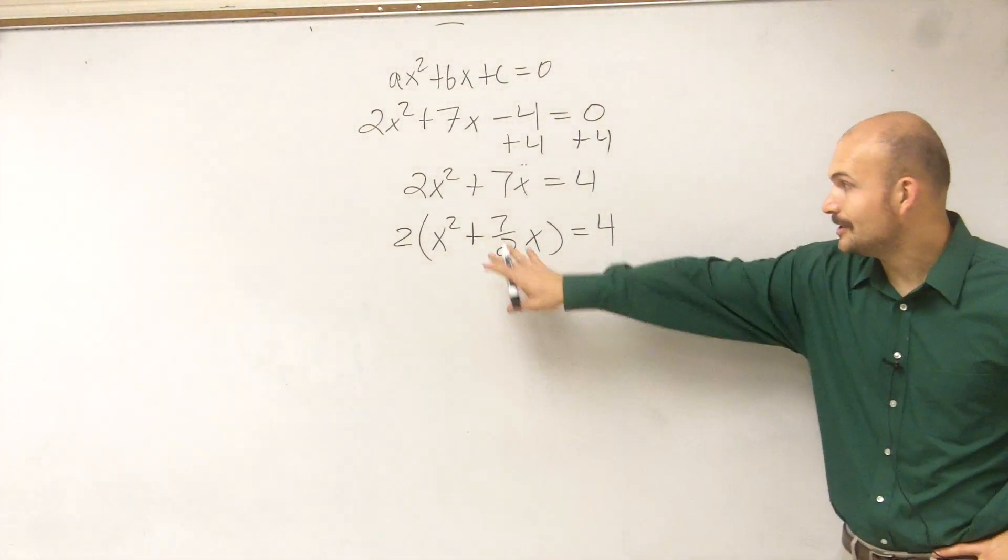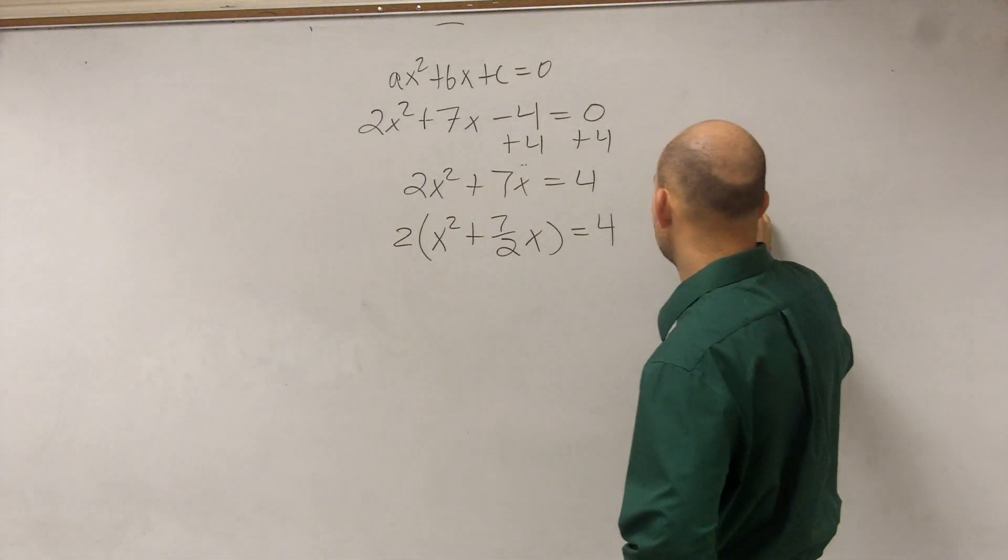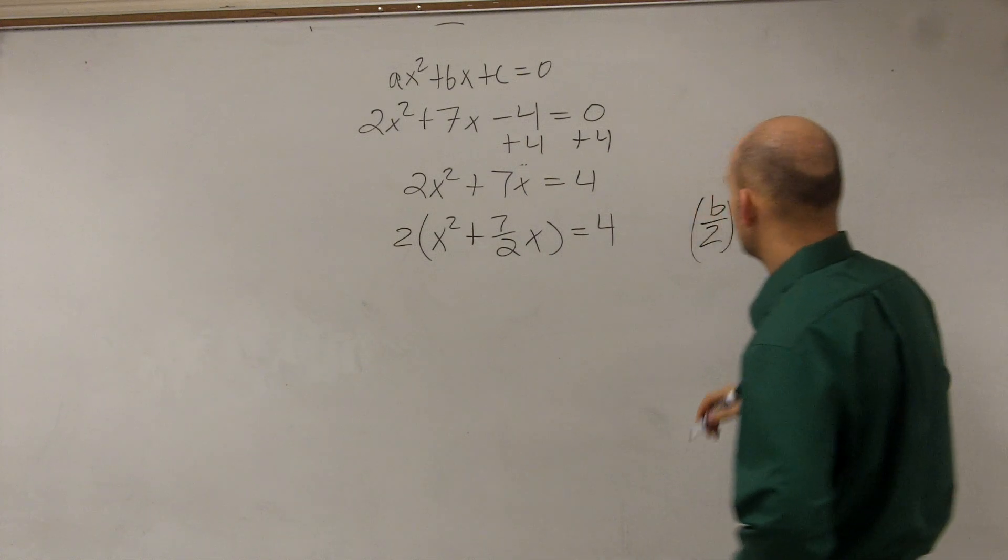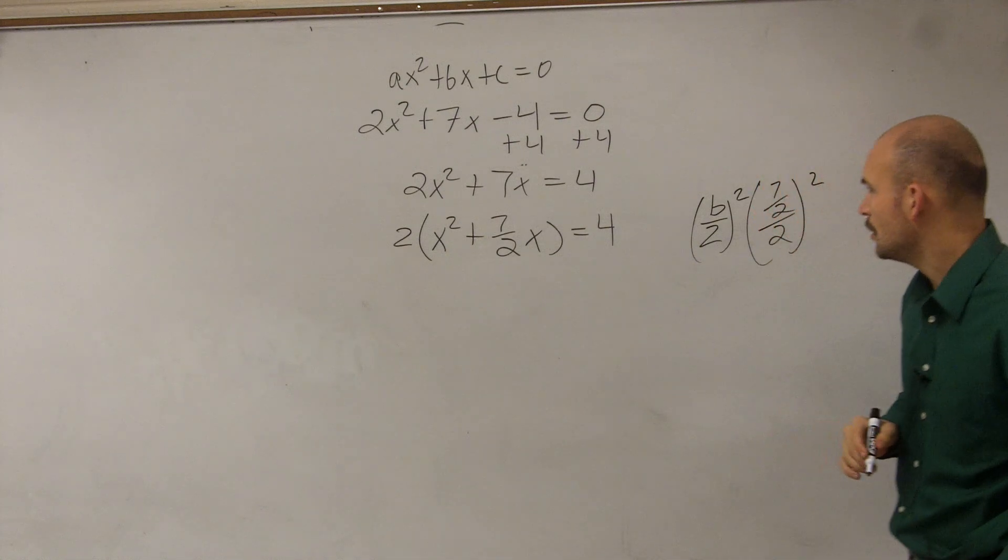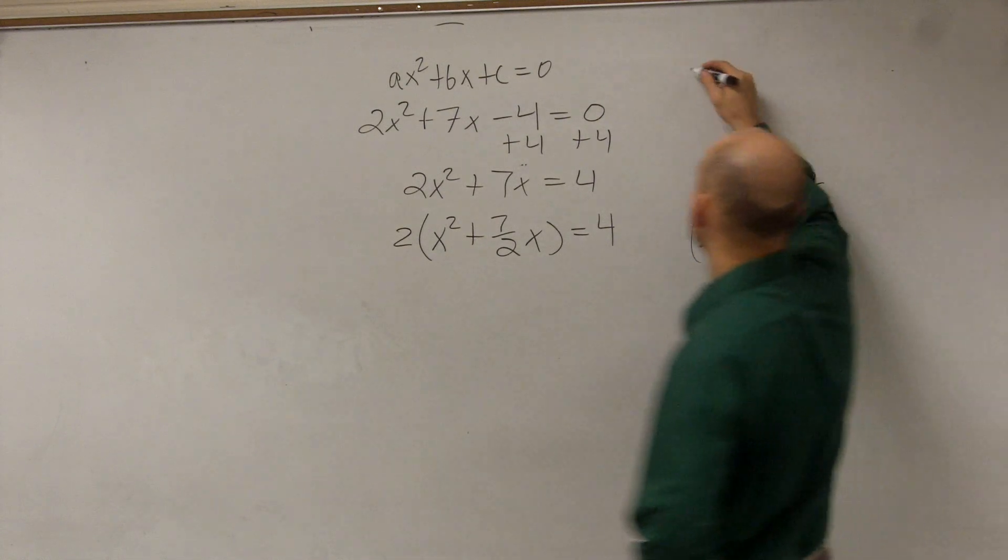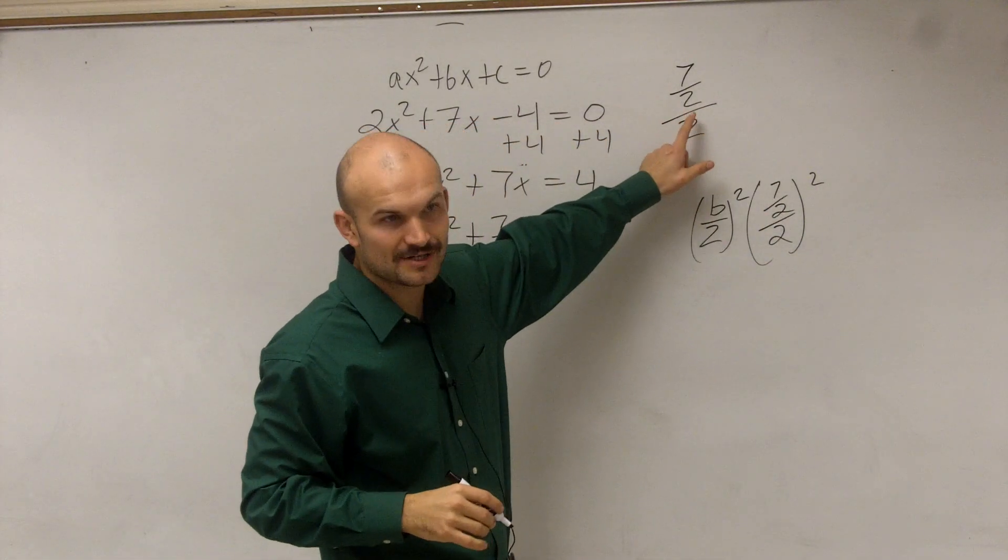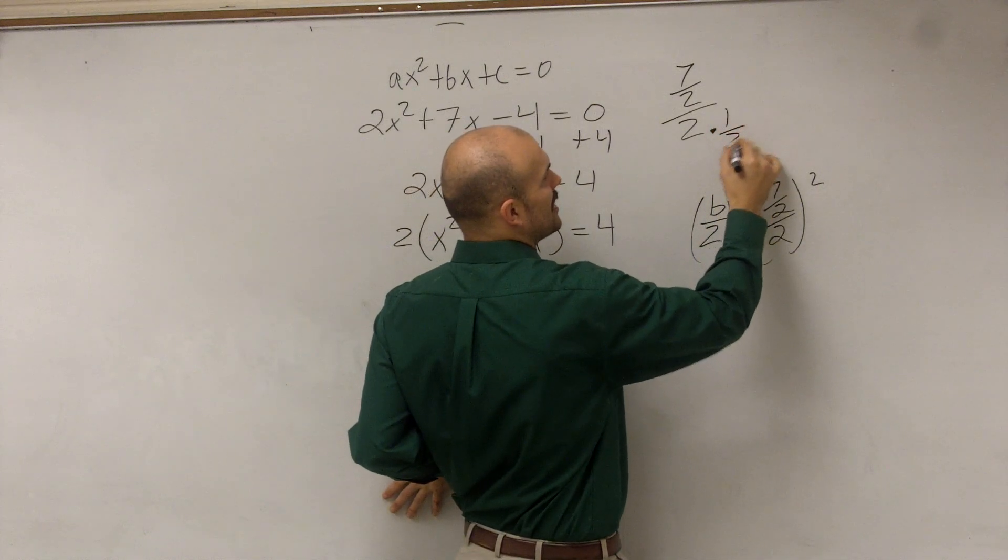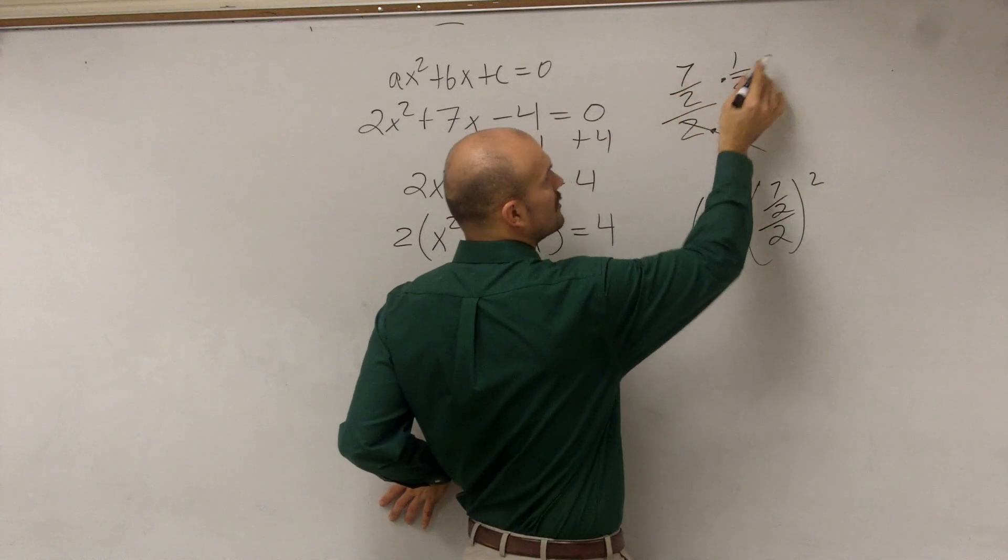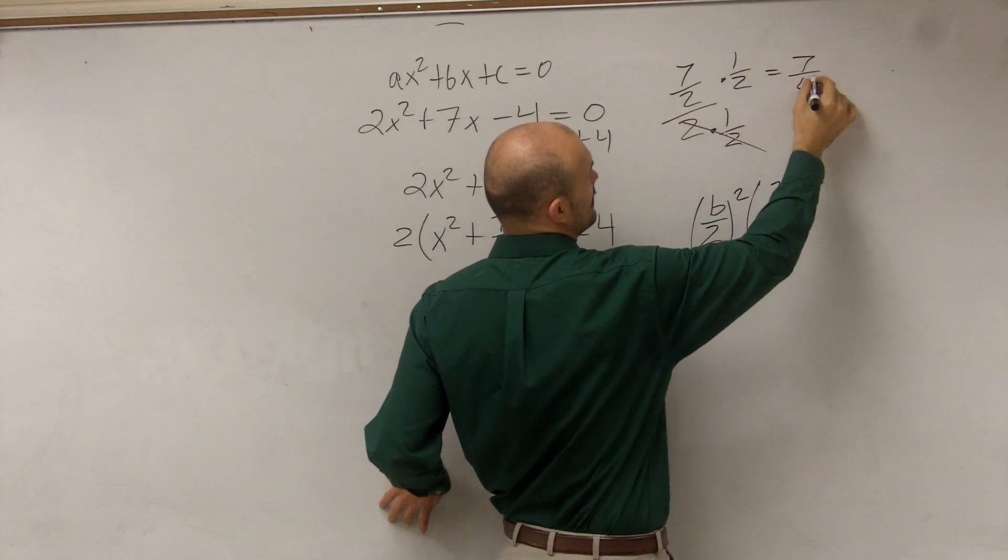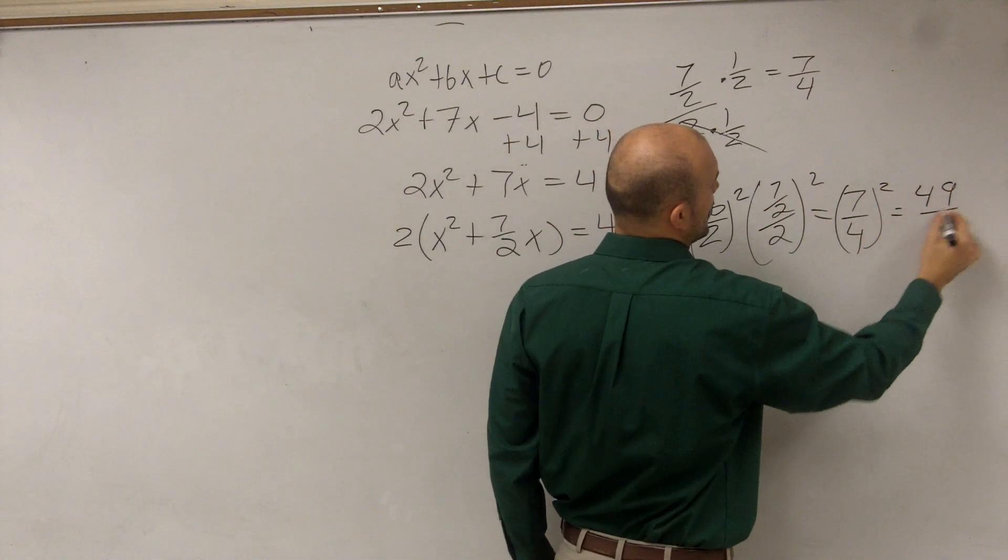All right. So now, here's what we have, but we need to complete the square, right? So what I'm going to do is I'm going to take b divided by 2 and square it. So I have 7 halves divided by 2 squared. 7 halves divided by 2. What do you do there? So you have 7 divided by 2 and then divided by 2. So remember, when you have a fraction over a fraction, you've got to get rid of your bottom fraction. So I'm going to multiply by the reciprocal. 2 times your reciprocal multiplies out to 1. 7 halves times 1 half equals 7 fourths. So really, this is 7 fourths squared, which equals 49 over 16.